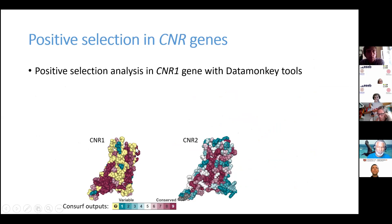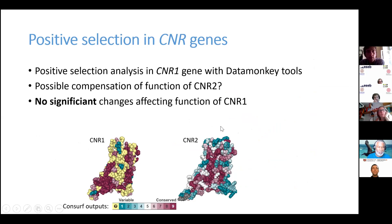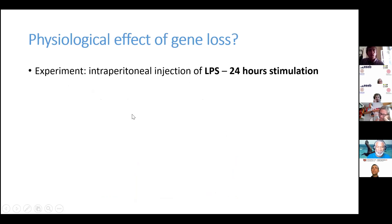Next, we did a positive selection analysis of the CNR1 gene to find out if this receptor somehow compensates the function of CNR2. We had no significant results. This receptor is very conservative and amino acid changes do not affect its function in parrots.